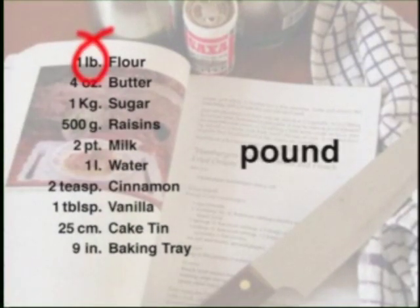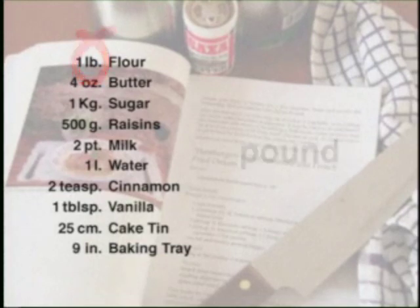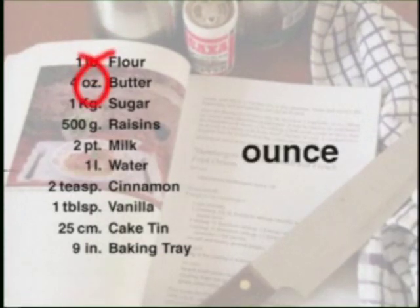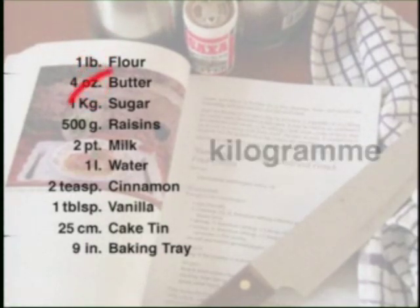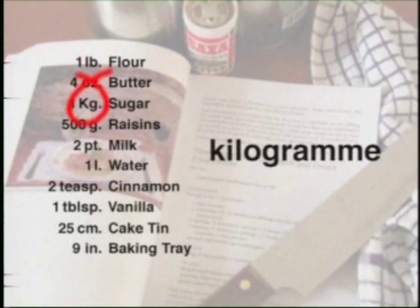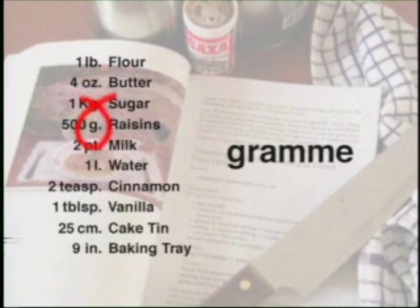LB is short for pound, OZ is short for ounce, and the metric measurement kilogram is shortened to kg, and gram is shortened to g.